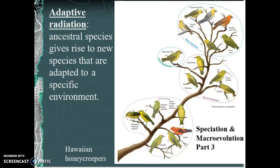We can observe speciation in the laboratory with bacteria and things that have very short generation cycles, but trying to do speciation with organisms that live for long periods and reproduce very slowly is not realistic. We cannot speciate horses today because we can't wait thousands of years to see enough generations. Keep that perspective in mind.